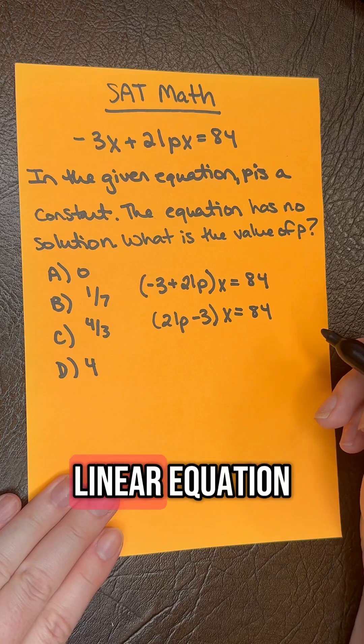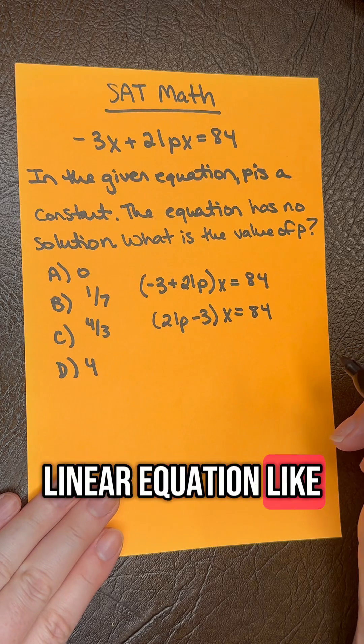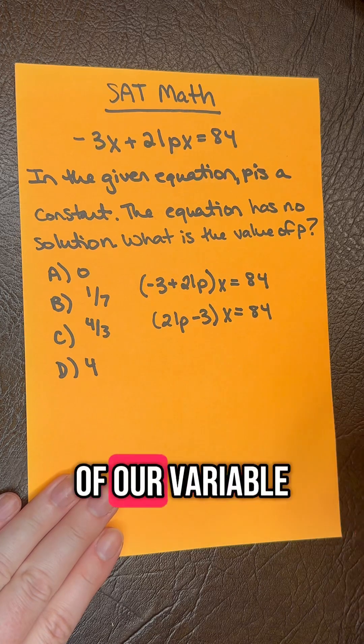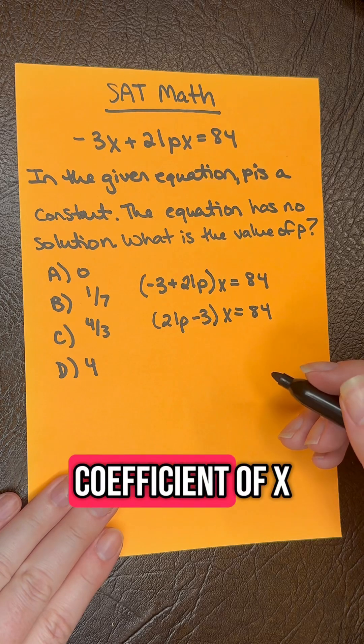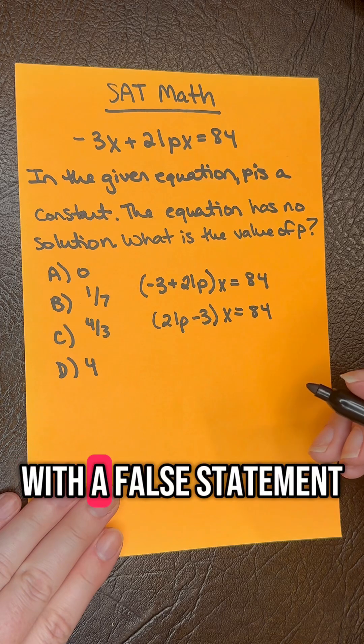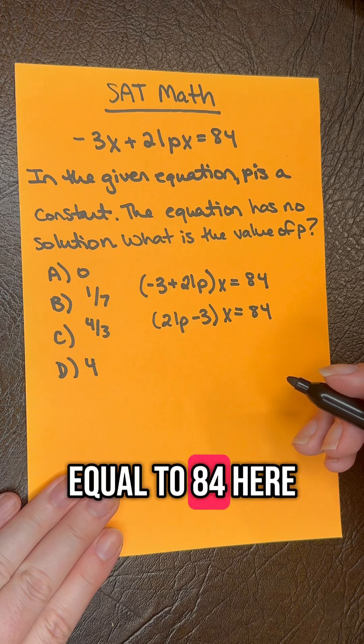So we know this is a linear equation, and the only time that a linear equation like this has no solution is if all of our variable terms cancel out. So think about it as the coefficient of X is going to become zero, and you're left with a false statement like zero is equal to 84 here.